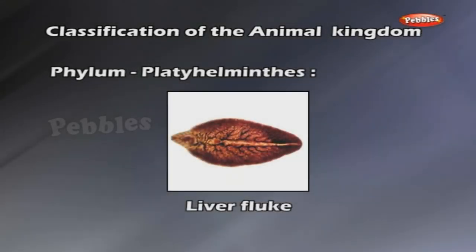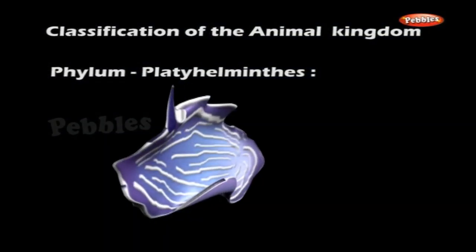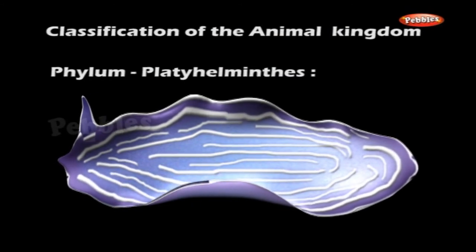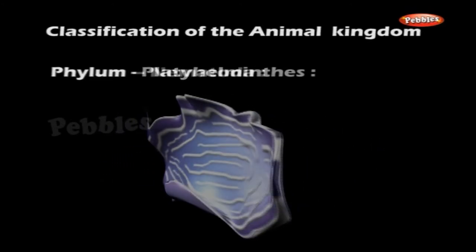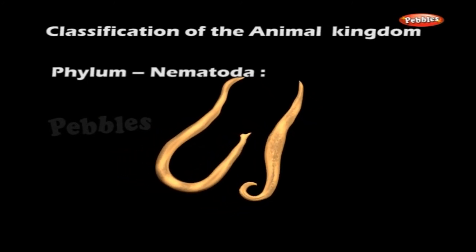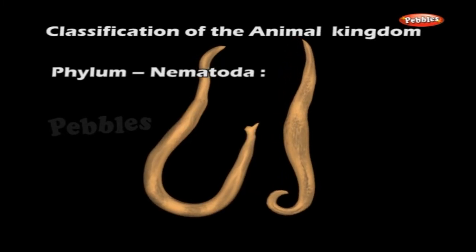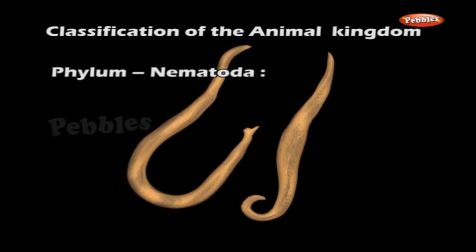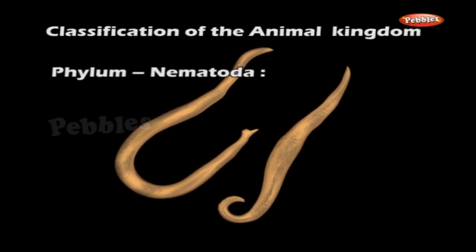Phylum Platyhelminthes. Liver fluke and tapeworm are examples of phylum Platyhelminthes. This phylum includes flatworms. They are acoelomates and are mostly hermaphrodite. Most of them are parasites. Phylum Nematoda are commonly known as roundworms. The body is unsegmented and the body cavity is a pseudocoelom. Sexes are separate and they exhibit sexual dimorphism. Some are free-living and some are parasites. Ascaris lumbricoides is an example of phylum Nematoda.